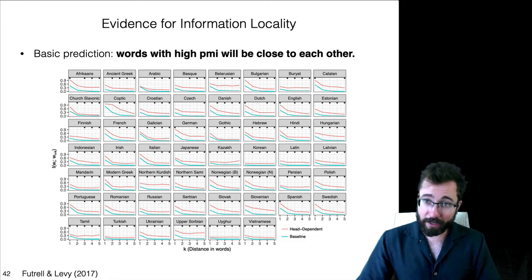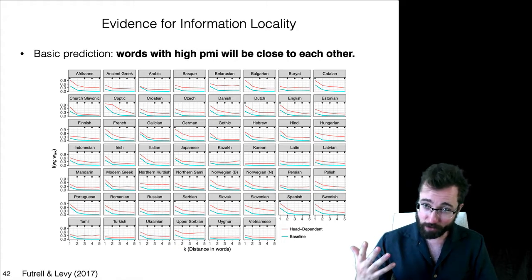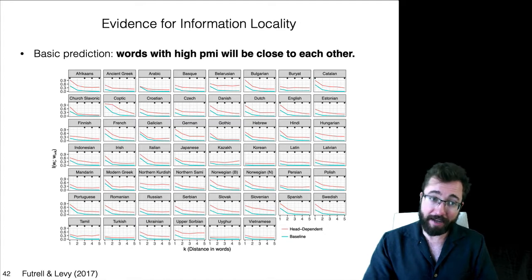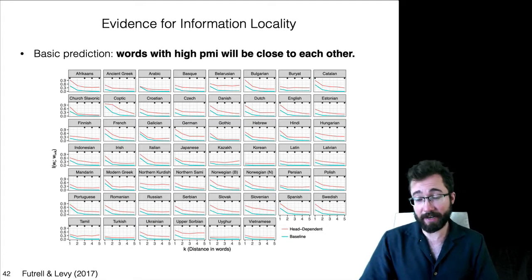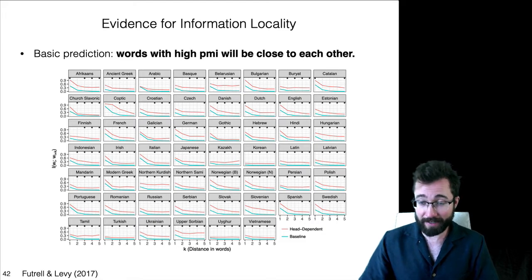And we see that here, there's also more evidence here for this idea that syntactic dependencies have the highest mutual information. The red line is always above the blue line. And the stars in this figure are actually significance numbers for that difference between the red and the blue line at that distance.